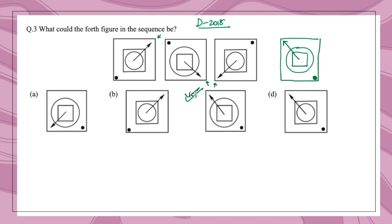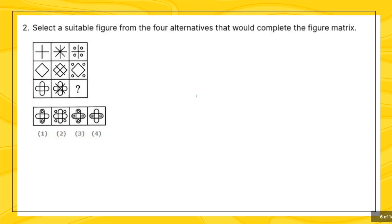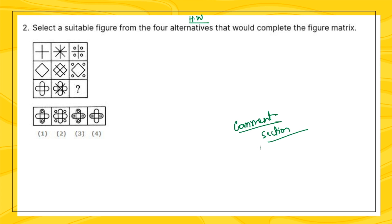Now it's time to give you a homework question so you can practice. The question says: select the suitable figure from the four alternatives that would complete the figure matrix. I've purposely made this question a little bit tougher. It's a matrix — you have to see the pattern in every row and then decide what comes in the blank. Pause the video, take a screenshot, try the question, and let me know your answer in the comment section.